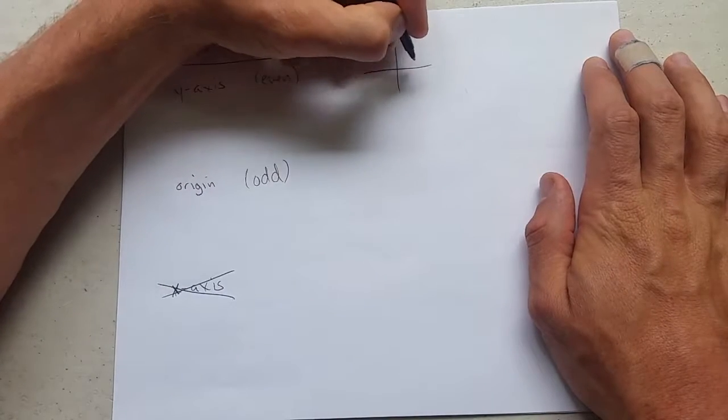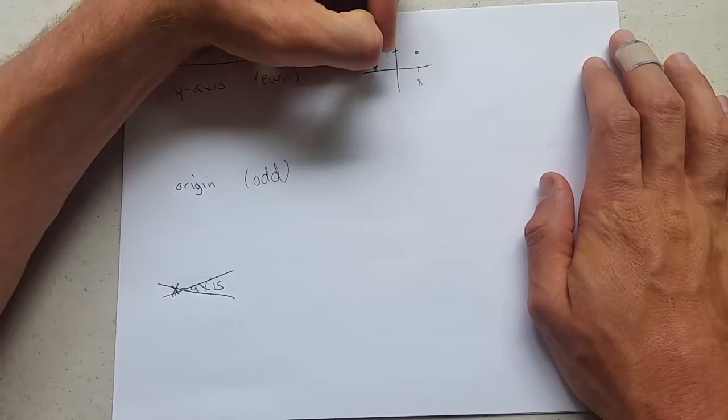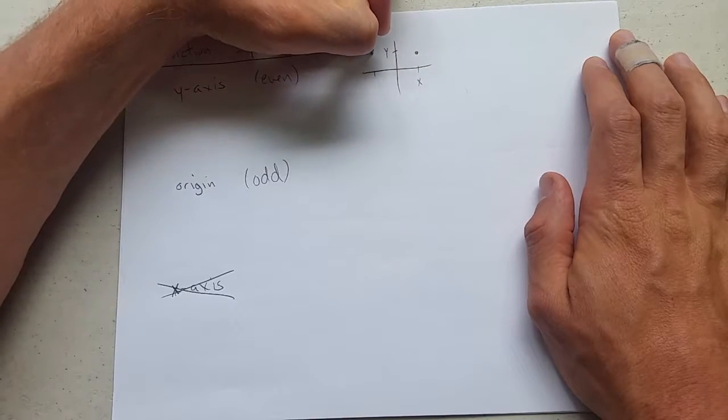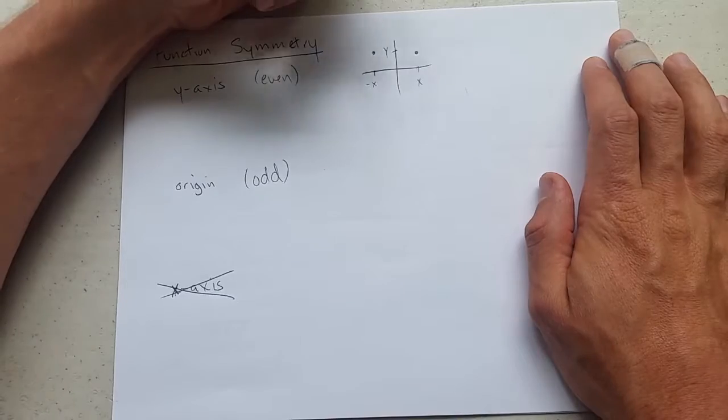So what does y-axis look like? Remembering from before, it was xy. If you reflect across the y-axis, the symmetric point would be negative xy.